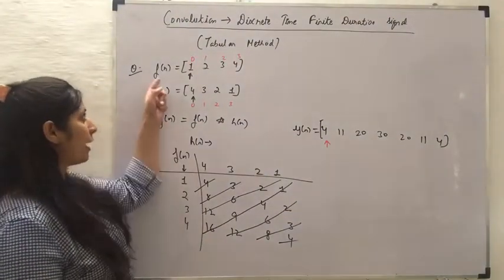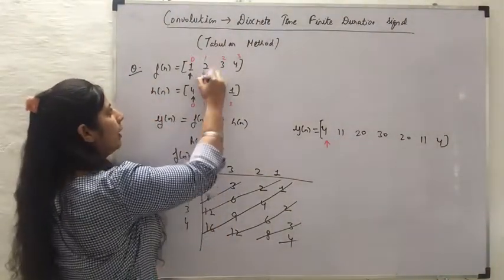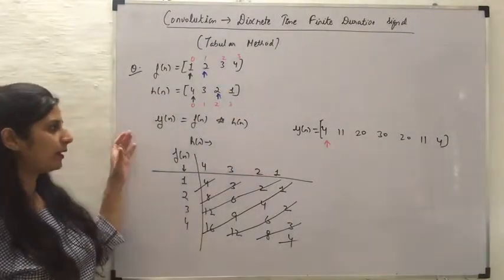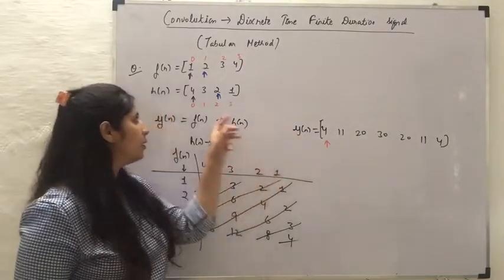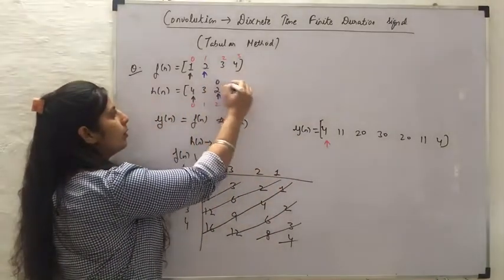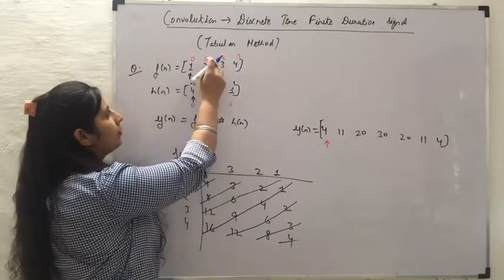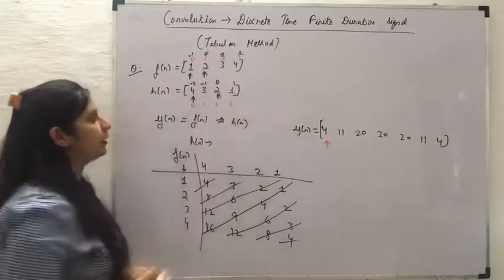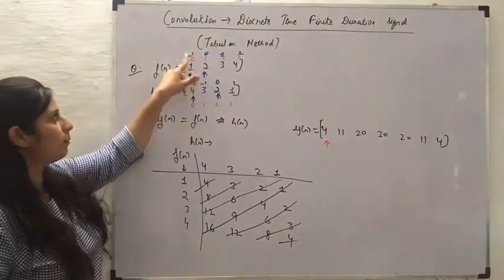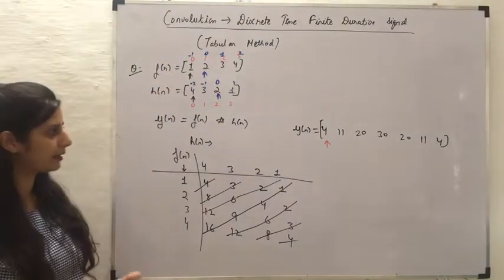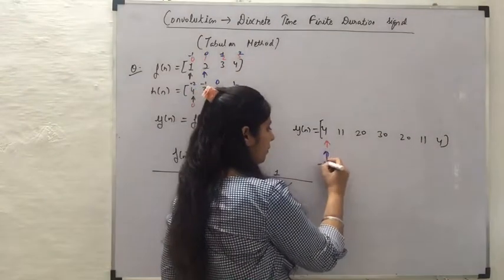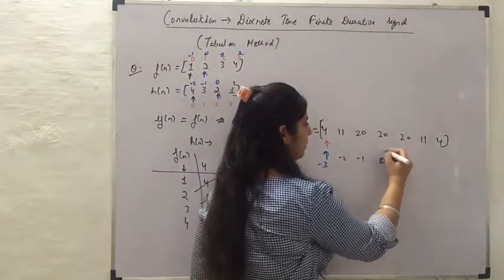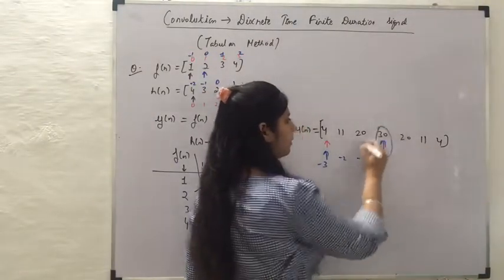Now if in the same question the arrow for f of n were placed at a different position, giving limits 0, 1, minus 1, and minus 2, and for h of n the limits were 0, minus 1, 1, and 2, then the lower limits would be minus 2 plus minus 1, which equals minus 3. So the lower limit of y of n would be minus 3. Counting up: minus 3, minus 2, minus 1, 0 — so we place the arrow at the value 30.